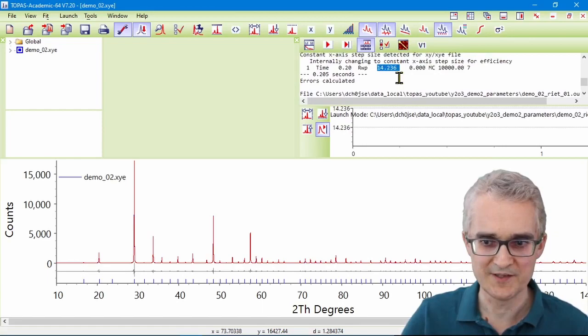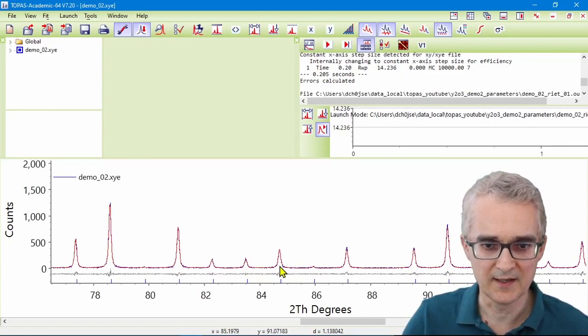We'll just do the Rietveld refinement again, just to make sure we're getting the same R factor of about 14% or so. So here we go, 14.236%. And it's a nice Rietveld refinement with all the peaks calculated in the correct positions.